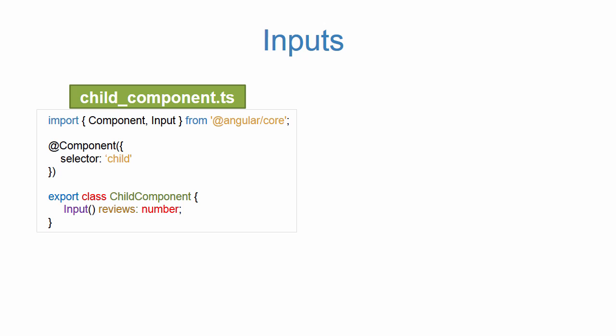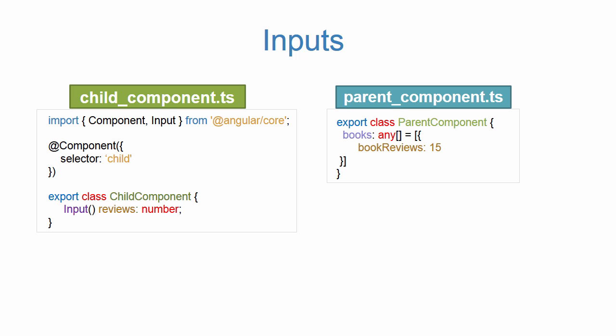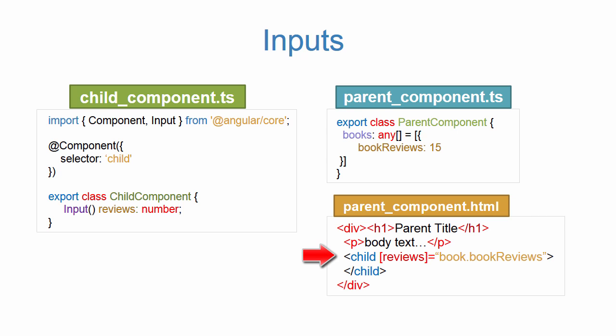So this property called 'reviews' is going to contain a number of reviews given to us by the parent. In our current application, we're displaying the number of book reviews in our template using book.bookreviews. Now the way that we gain reference to book reviews in our child component is by creating a binding inside of our child selector — so inside the parent component HTML file, we add our child selector referencing the child component and then add a binding.